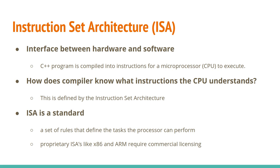I wanted to talk about RISC-V today. It's an instruction set, or an ISA — the interface between hardware and software. For example, you have a C++ program and it gets compiled into instructions for your processor to execute. But how does the compiler know which instructions the CPU understands? This is defined by the instruction set architecture. The ISA is a standard — a set of rules to define the tasks that the processor can perform.